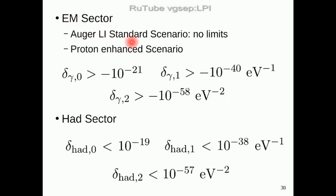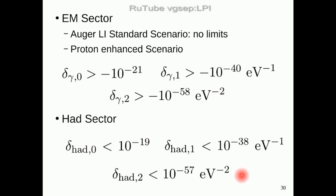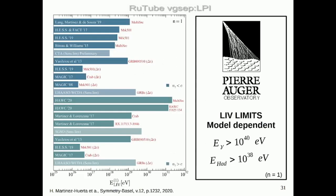Going to the conclusions: for the electromagnetic sector, under the Auger standard Lorentz invariance scenario no limits can be set; under the proton-enhanced scenario we managed to set these limits. For the hadronic sector, our data at five-sigma confidence level can exclude these values of delta_h. It is very hard to compare different measurements of Lorentz symmetry breaking — each experiment has different systematics, and all results are model-dependent in different ways, so there is no trivial way to compare.